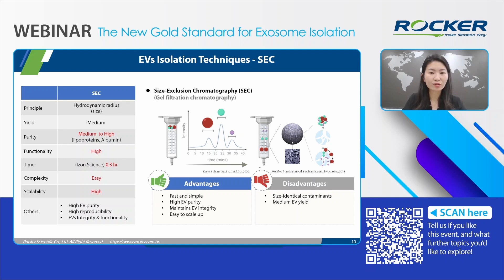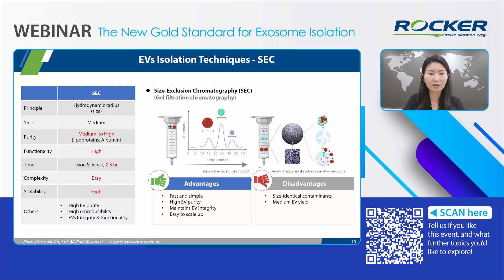Next is size exclusion chromatography, SEC, also known as gel filtration chromatography. SEC separates particles by size — a sample flows through a column filled with porous material. Smaller molecules enter the pores, taking longer and more complex paths, which slows their elution, while large molecules cannot enter the pores and take a shorter path, eluting faster. Compared to UC, SEC is easier, faster, and can be completed in 15 minutes using a commercial kit. It also preserves EV integrity and activity. However, SEC cannot fully eliminate contaminants of similar size, so it is often paired with other methods such as ultrafiltration.